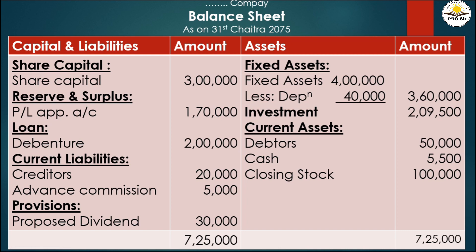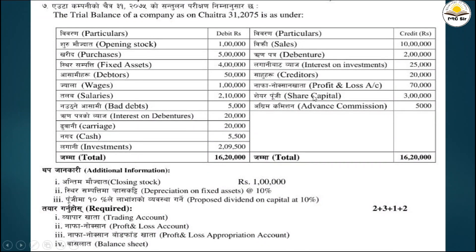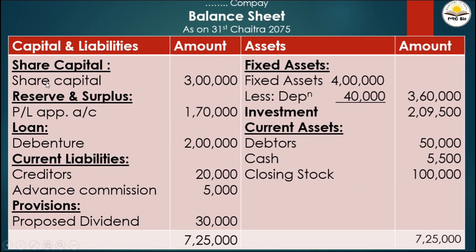Share capital is 3 lakh. Then reserves and surplus - this includes the P&L appropriation account balance. The balance from the appropriation account goes under reserves and surplus on the capital and liabilities side of the balance sheet.